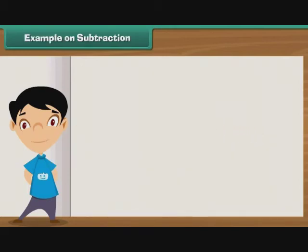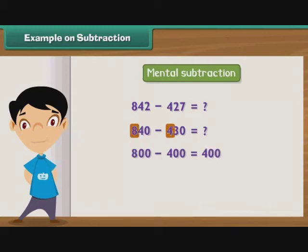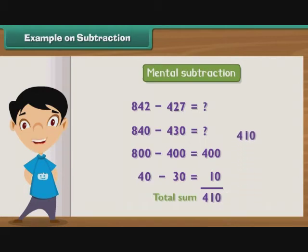Let us practice mental subtraction. Subtract 427 from 842. To simplify subtraction, let us convert 427 to 430 and 842 to 840 to subtract 430 from 840. First, subtract 400 from 800 to get 400. Then subtract 30 from 40 to get 10. Therefore, the difference between 840 and 430 is 410.